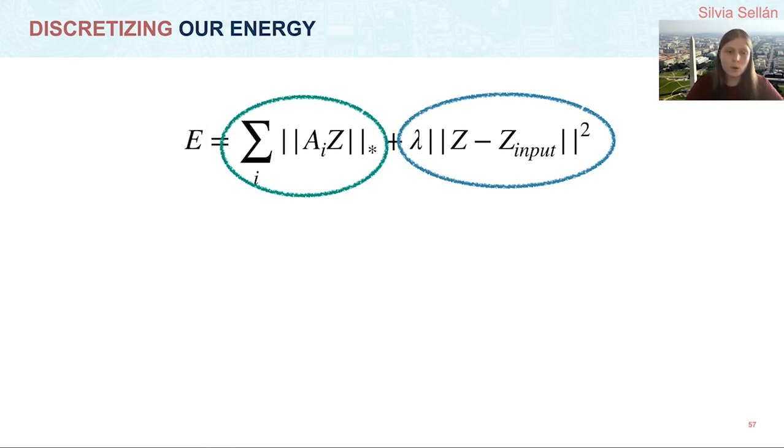In fact, this energy is more than convex. It can be written as a semi-definite program. However, we're going to go a different route in minimizing it, thanks to an additional observation.